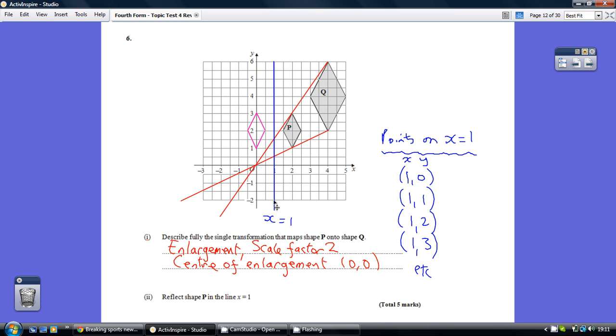Now, just to clarify why this is the line x equals 1, consider various points on this line, where we've got 1, 0, or 1, 1, or 1, 2, or 1, 3, etc. All the coordinates on this line, so here are some of them, what do they have in common? Well, the x value is consistently 1, so x equals 1.